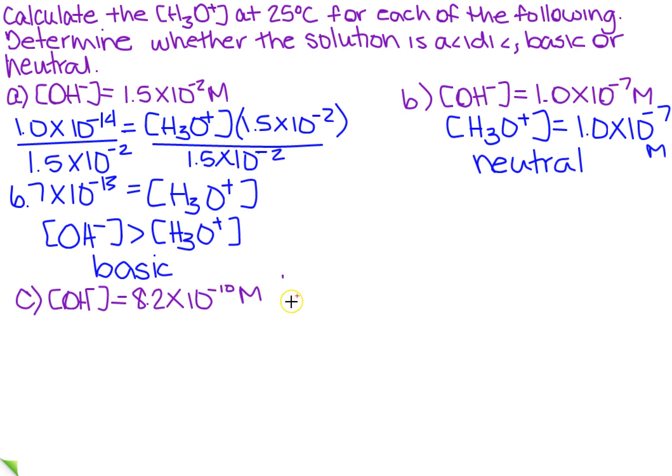So now, what about this very last one? Well, it's the same thing again. I'm going to take 1.0 times 10 to the minus 14th, and then that's going to equal the concentration of the hydronium ion times the concentration of the OH ion.